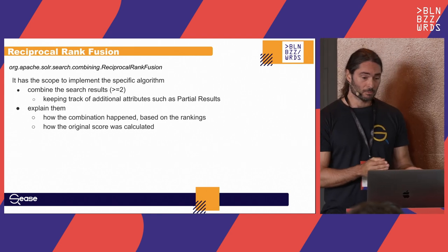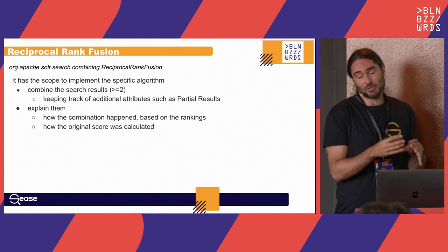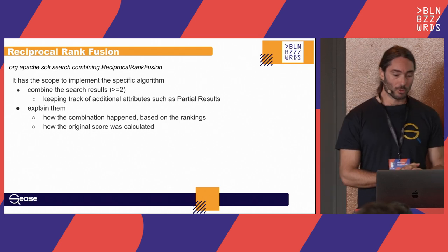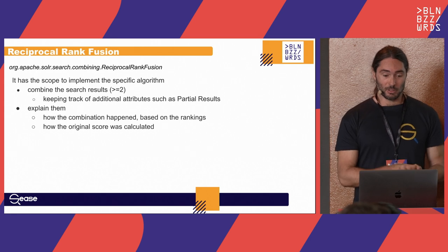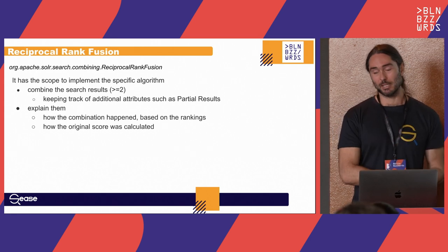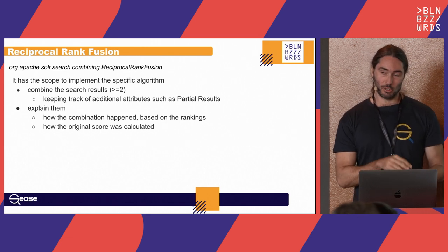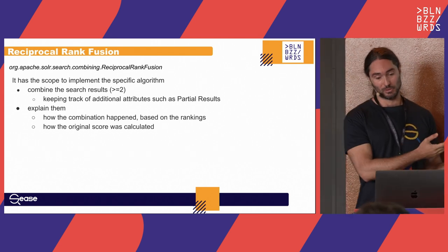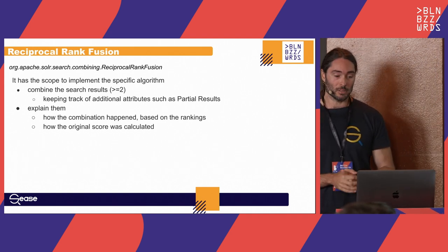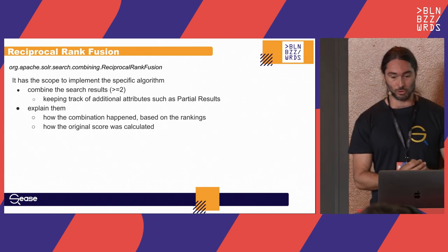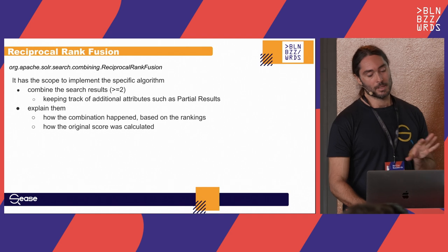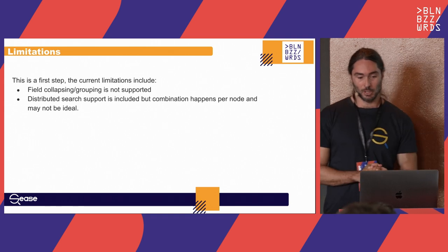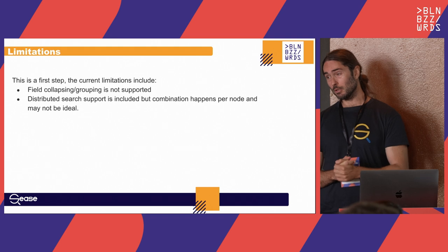The RRF implementation of QueriesCombiner is where the actual code happens — merging multiple result sets. This class is also responsible for explainability, because the only place you know why a document ends up in a certain position is in the RRF implementation, which knows what position it had in each ranked list and also the original score — so you can show the user both how the combination happened and what the original scores were.